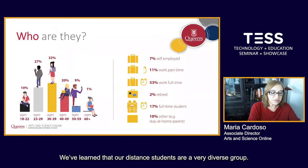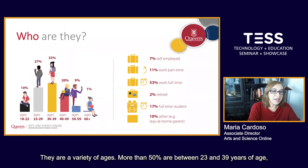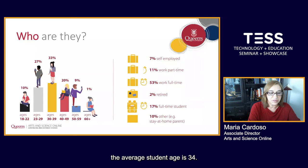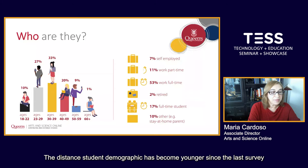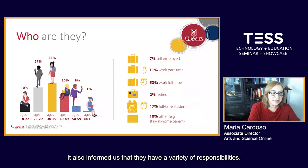We've learned that our distant students are a very diverse group. 40% of respondents identify as being from equity-seeking groups. There is a variety of ages — more than 50% are between 23 and 39 years of age, and the average student age is 34. The distant student demographic has become younger since the last survey in 2018, as then the largest group was ages 35 to 45.